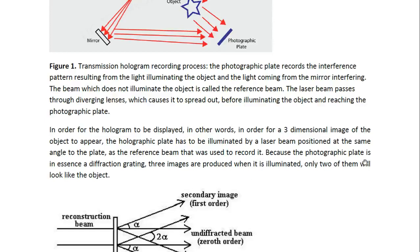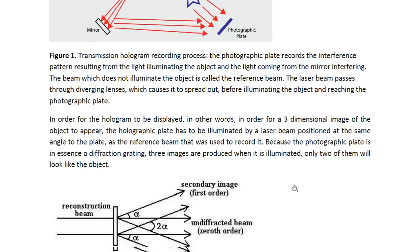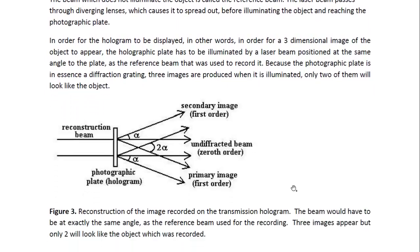Now because the photographic plate is in essence a diffraction grating, although it doesn't have regular spaces, it has different spacings between the grooves, three images are produced when it is illuminated.